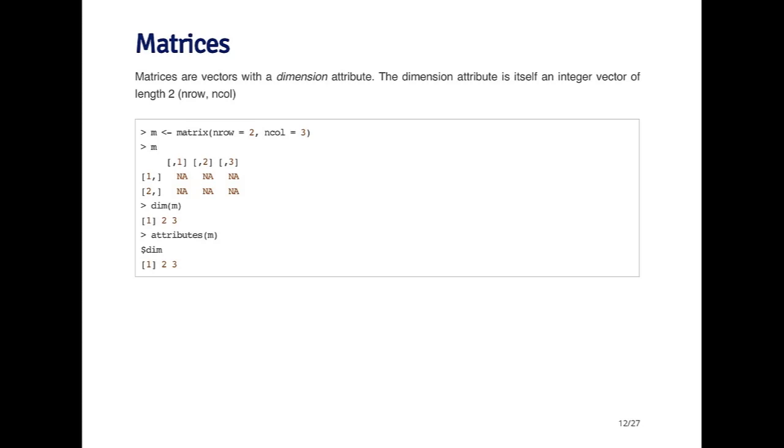you'll see that first of all, the matrix is initialized with NA values, so there's no values in here. You can see that there's two rows and three columns, and they're labeled by the numbers in the brackets.